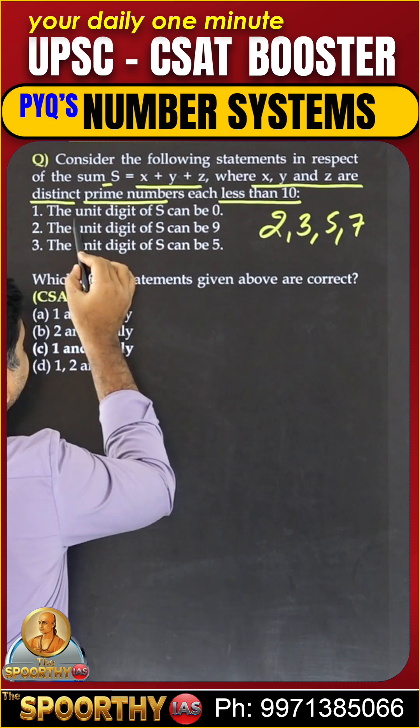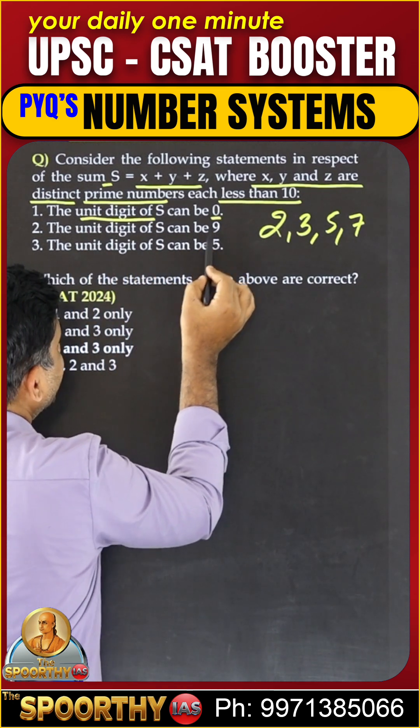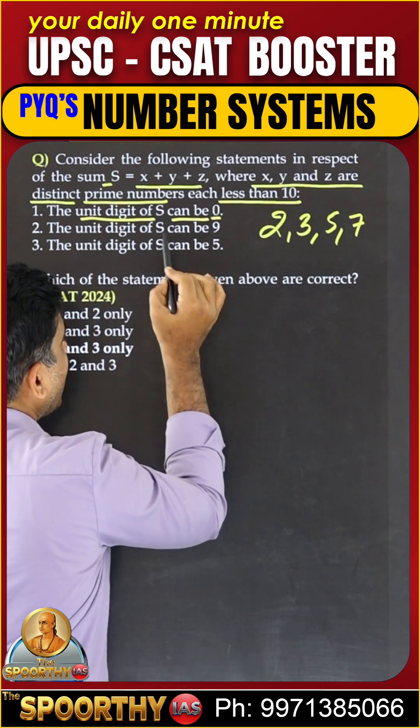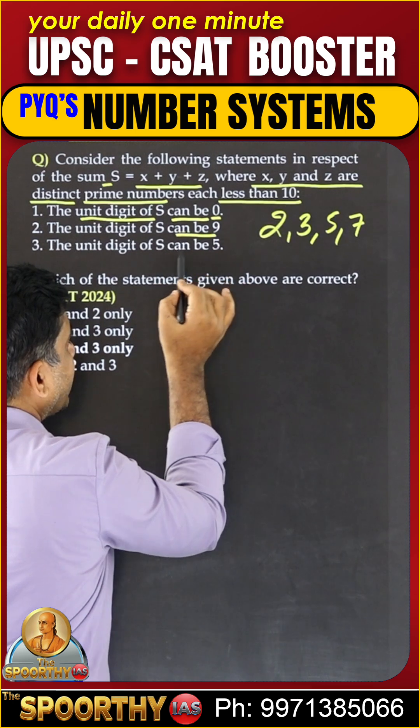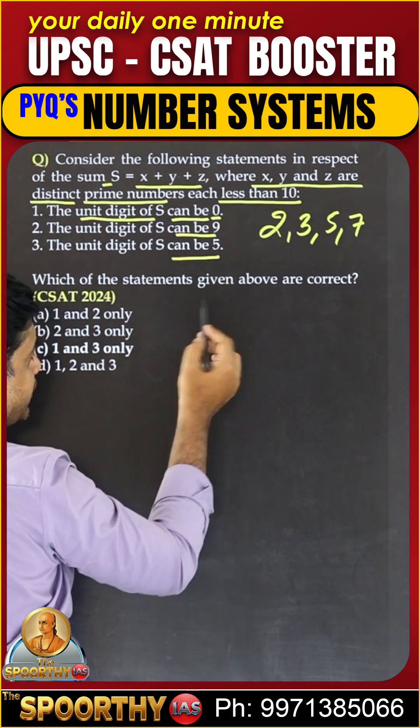The unit digit of S can be 0 — they are not saying always. Can be 0, can be 9, can be 5. We will check each of these.